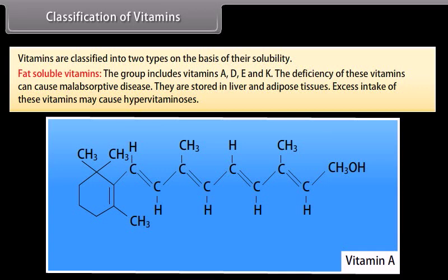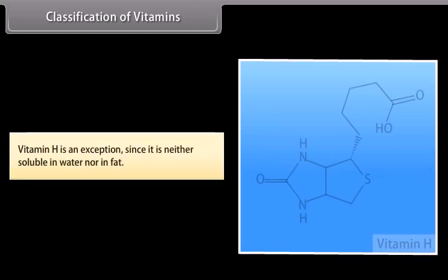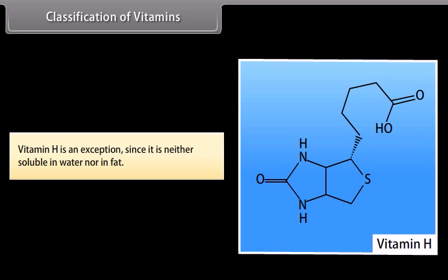Classification of vitamins: Vitamins are classified into two types based on solubility. Fat-soluble vitamins include vitamins A, D, E, and K; deficiency of these may cause malabsorptive diseases; they are stored in liver and adipose tissues; excess intake may cause hypervitaminosis. Water-soluble vitamins include vitamins B and C; they are stored in lesser amounts and must be supplied regularly in diet because they are readily excreted in urine. Vitamin H is an exception since it is neither soluble in water nor in fat.